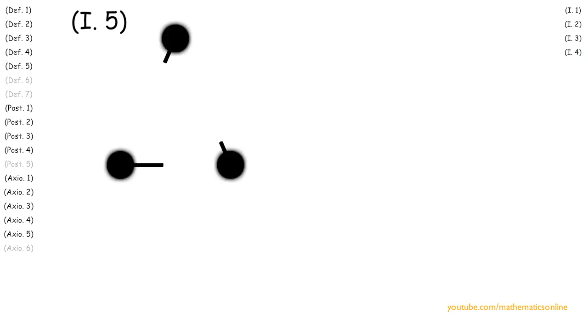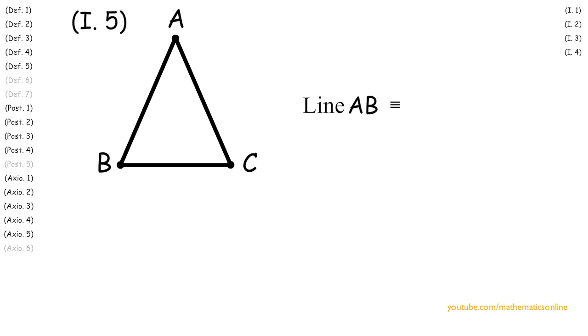To begin, we are given the isosceles triangle ABC, and line AB is congruent to line AC.